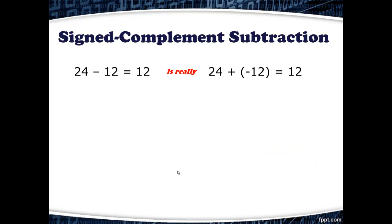For signed complement subtraction, we really need to think about subtraction as nothing more than an addition of a negative number. For example, 24 minus 12 equals 12. If we think of that as 24 plus negative 12, we can use the two's complement notation to simplify our arithmetic.